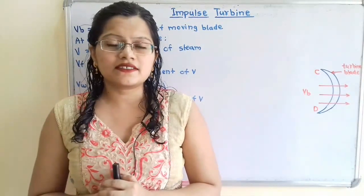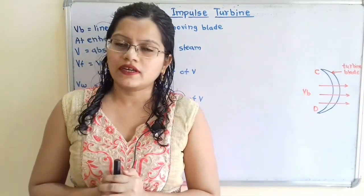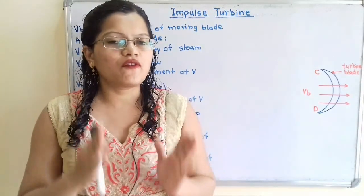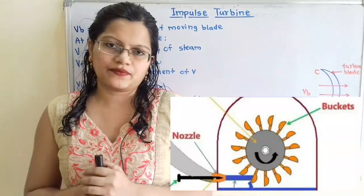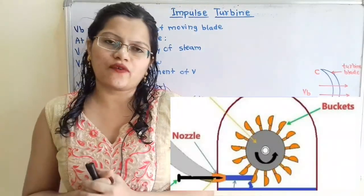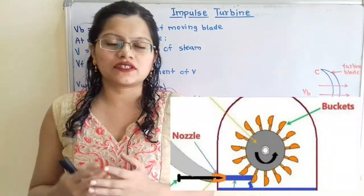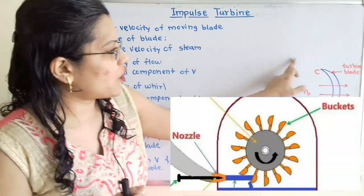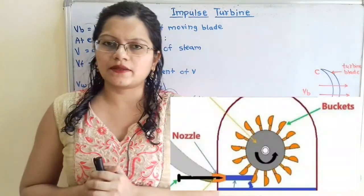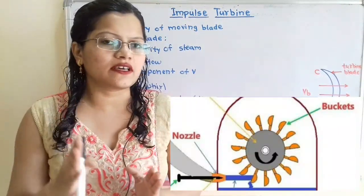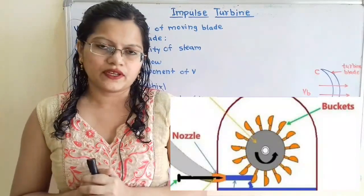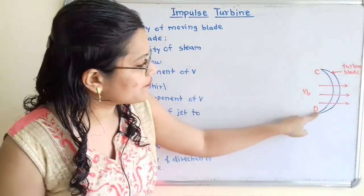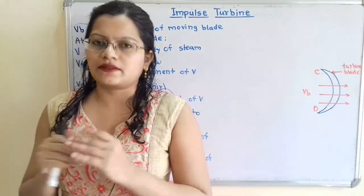Let us first understand the concept of Impulse Turbine. It runs with the help of force or impulse of the steam jet. The steam jet is formed when steam passes through the nozzle. Then the steam jet strikes or impedes on the turbine blades mounted on the circumference of the wheel, glides over the concave surface of the blade, and leaves the turbine.